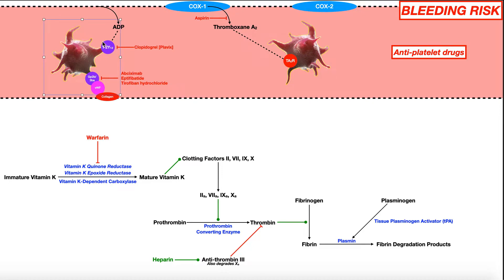These cells right here are platelets, and platelets are cells that are necessary for blood clotting and really helping to initiate the coagulation cascade. So if we have somebody who's at risk of developing a blood clot or even at risk of a stroke, in some cases these drugs may actually be warranted.